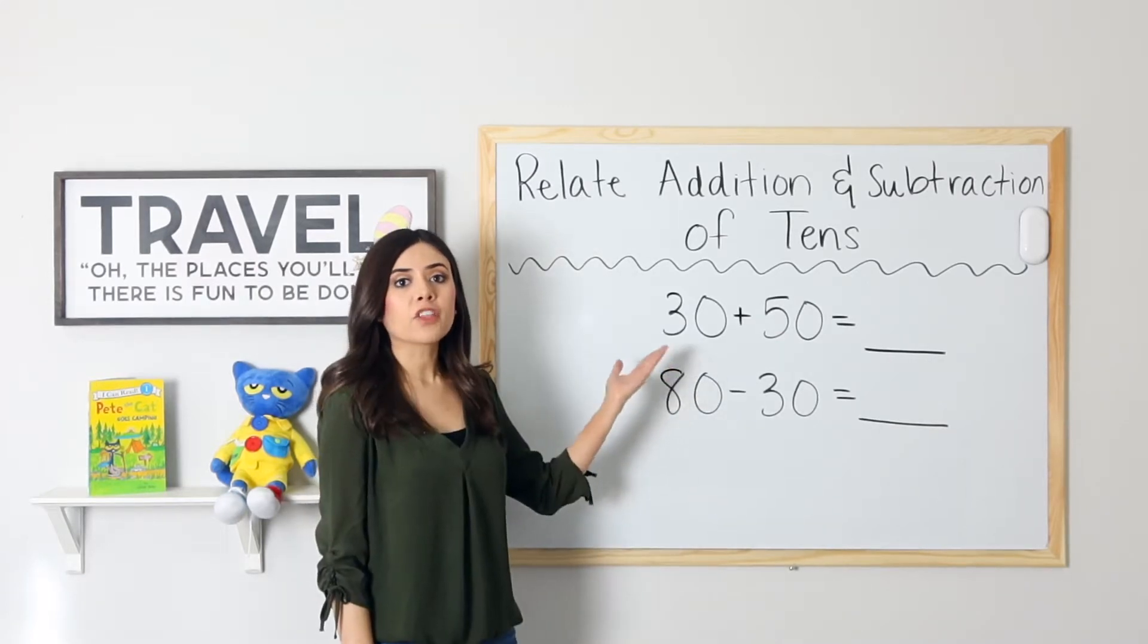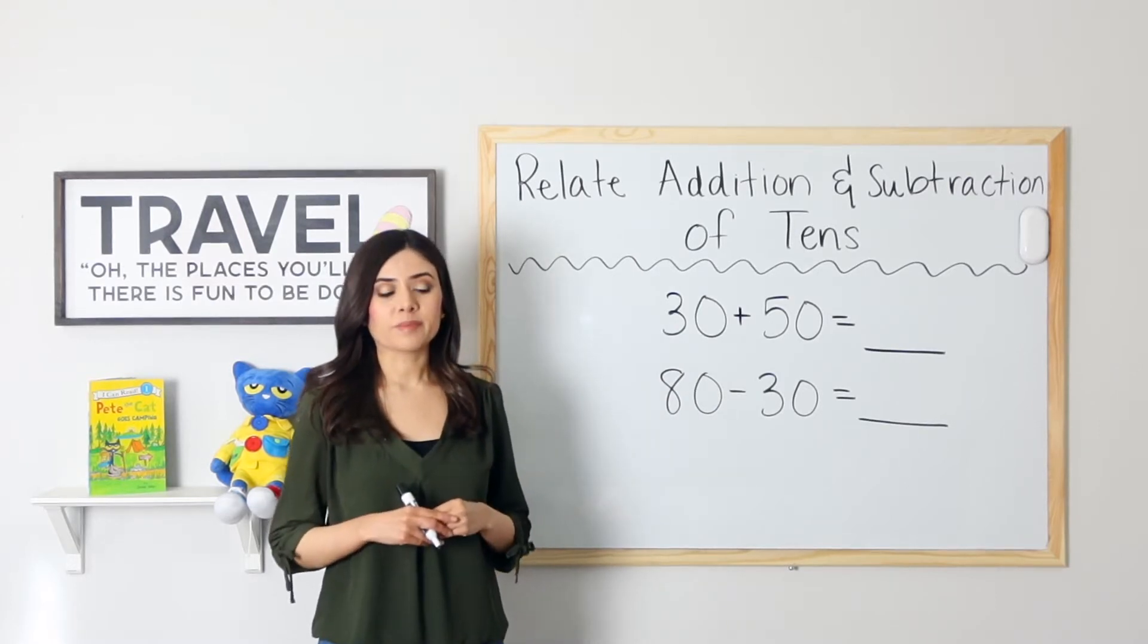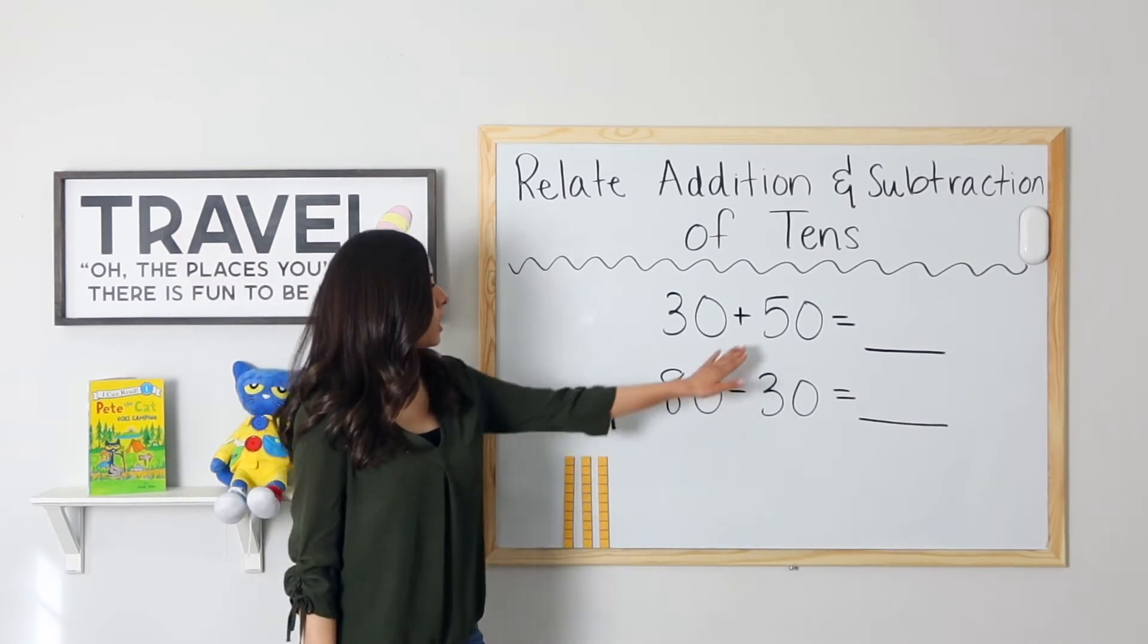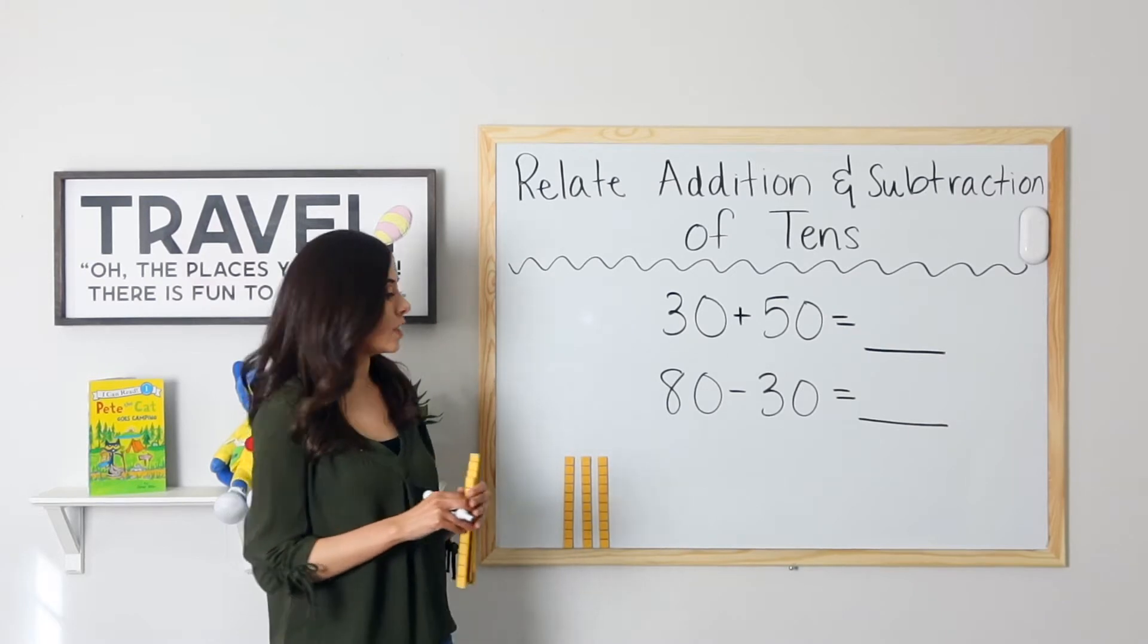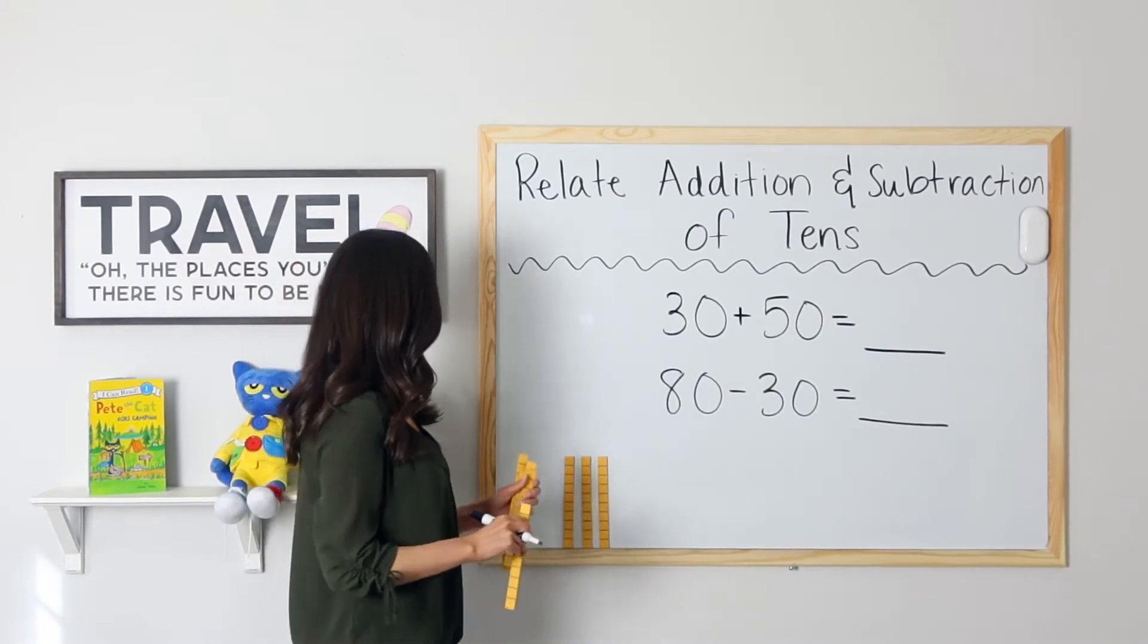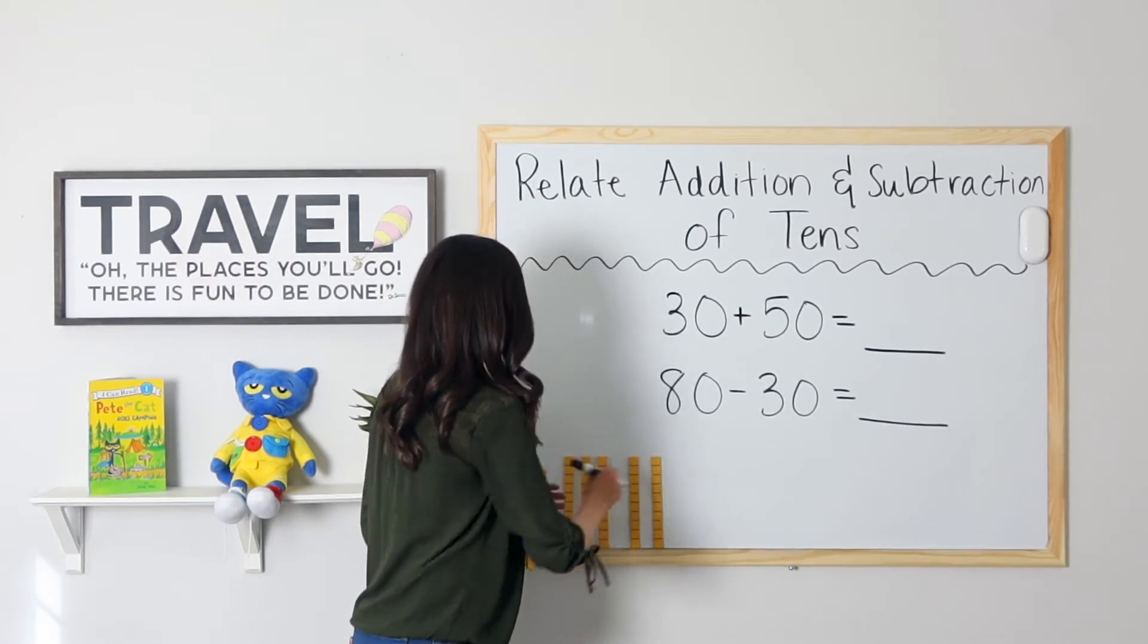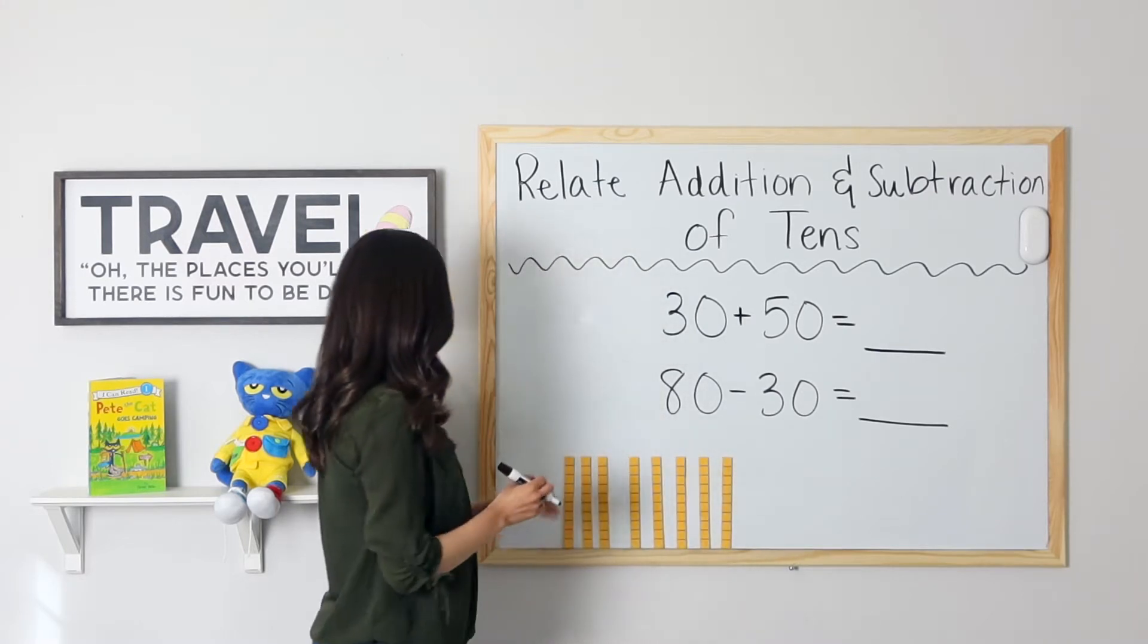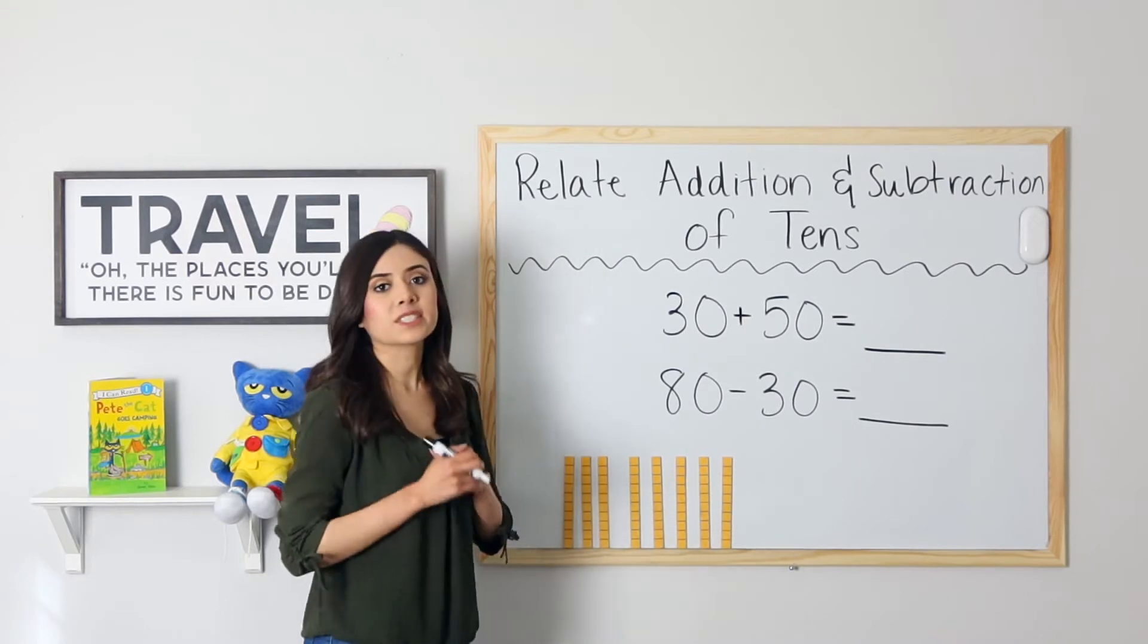So I have 30 plus 50. What is 30 plus 50? I have 30 units, 10, 20, 30. I will add 50 more to see what I have in all. Ready? So 30, 40, 50, 60, 70, 80. 30 plus 50 equals 80.